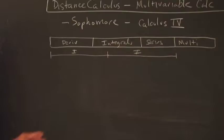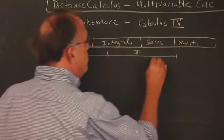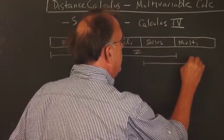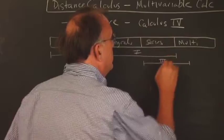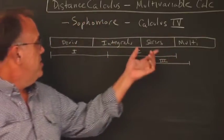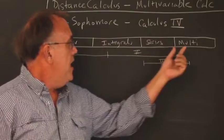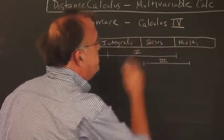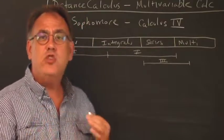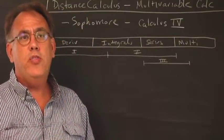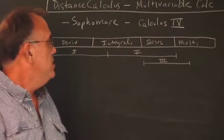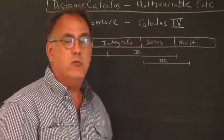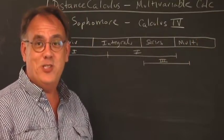Some courses at some universities do this thing called Calculus 3, and usually Calculus 3 is the series part of the course and a little bit of the multivariable, although sometimes it's half the series. It gets very strange and doesn't cut up well with other courses, so some universities who dissect their courses differently make it difficult to find the right course to take.